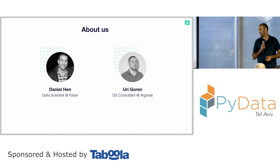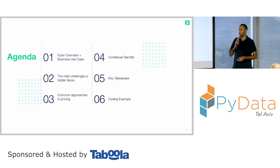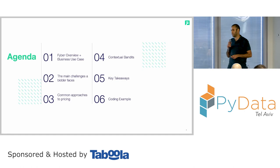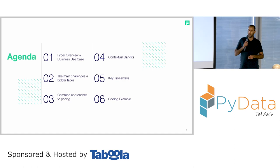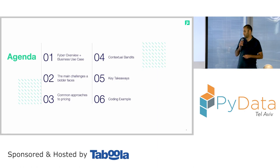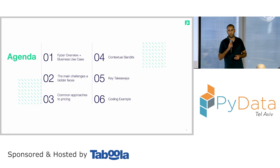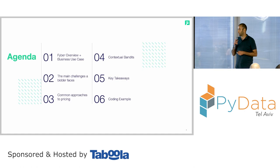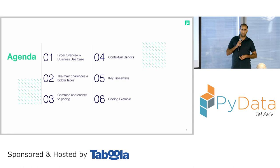So agenda for today: we'll start with a brief overview about what Fiber is and what we do. Then we'll dive into a specific business use case focusing on the advertiser side. We'll have a deep dive on the main challenges that a bidder and advertiser faces, then go into common approaches to pricing. We'll dive into contextual bandits, which is the main topic we investigated and researched. We'll wrap up with key takeaways and then Uri will present a coding example.